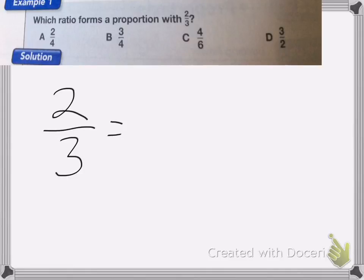We can look at these and see if any of these numbers reduce down to two-thirds, because if they reduce, we know it has to be the same. Let's look first at two-fourths. If I reduce two-fourths, I get one-half. That's not the same as two-thirds, so that one's not correct.